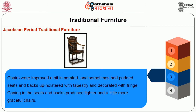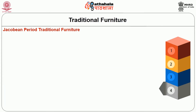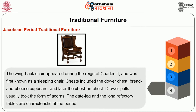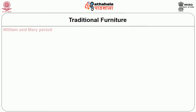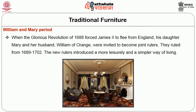Chairs were improved a bit in comfort and sometimes had padded seats and backs upholstered with tapestry and decorated with fringe. Caning in the seats and backs produced lighter and more graceful chairs. The wing back chair appeared during the reign of Charles II and was first known as a sleeping chair. Chests included the dover chest, bread and cheese cupboard, and later the chest on chest. Drawer pulls usually took the form of acorns. The gate leg and the long refectory tables are characteristics of the period.